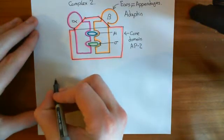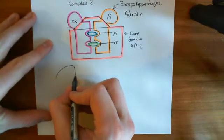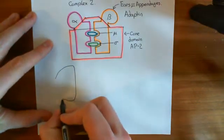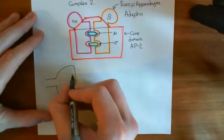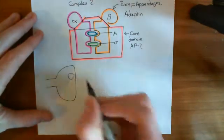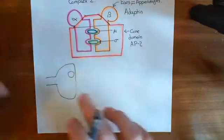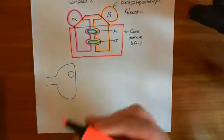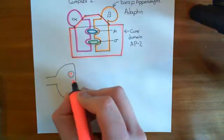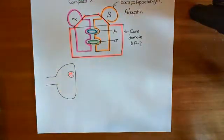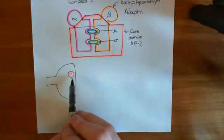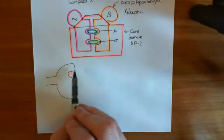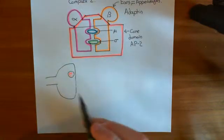If we think about endocytosis in, let's say, an axon terminal here — so let's say this is an axon terminal — when we think about exocytosis in an axon terminal, when we think about fusing the membrane of the synaptic vesicle with the plasma membrane of the axon terminal, what is going to happen? Well, all of the proteins that are in the membrane of the synaptic vesicle, those are going to go into the plasma membrane.